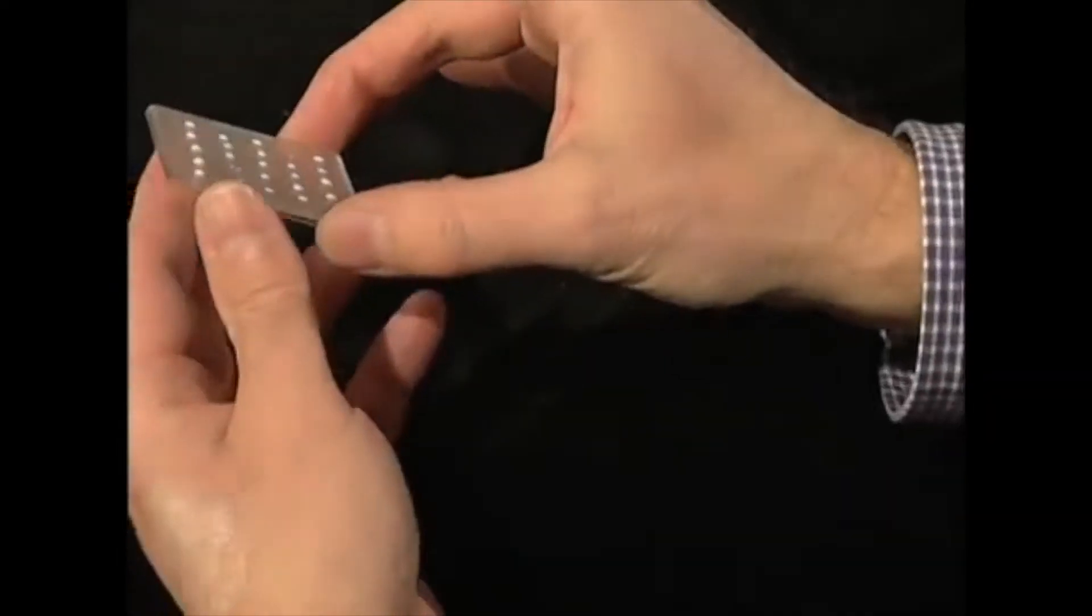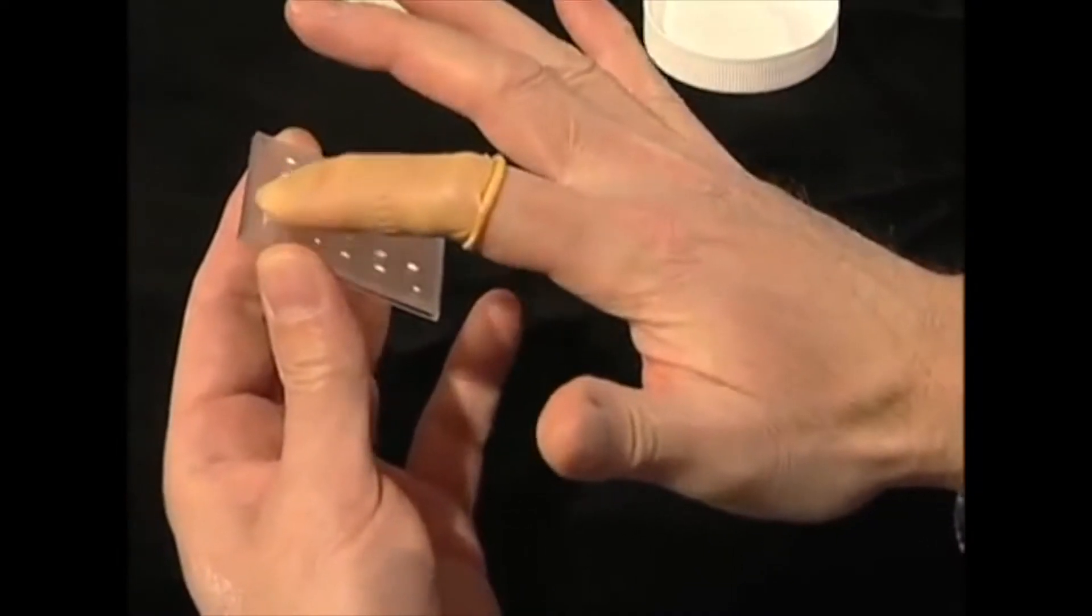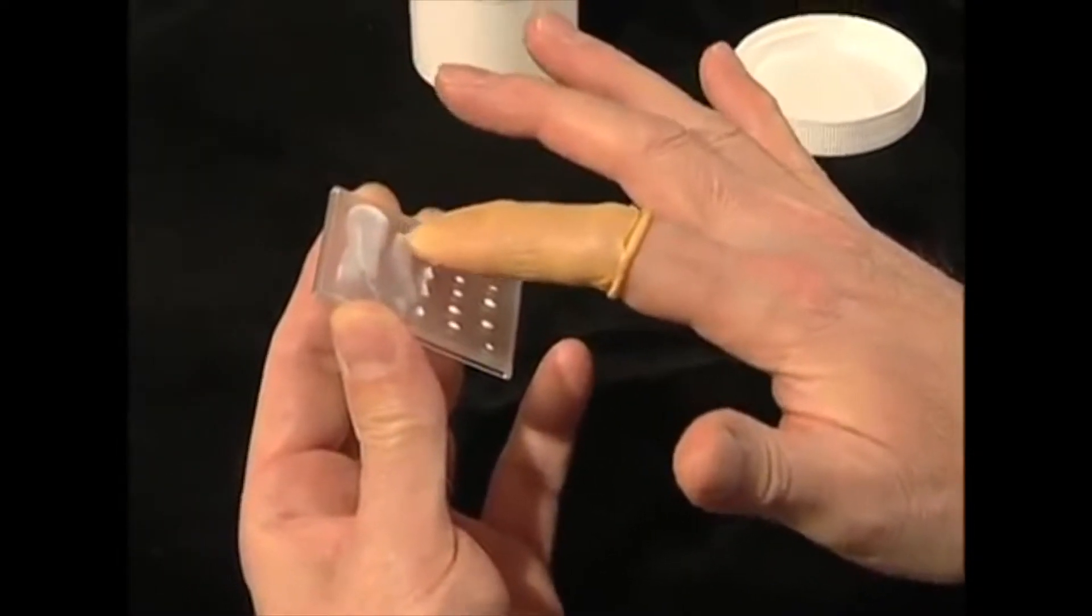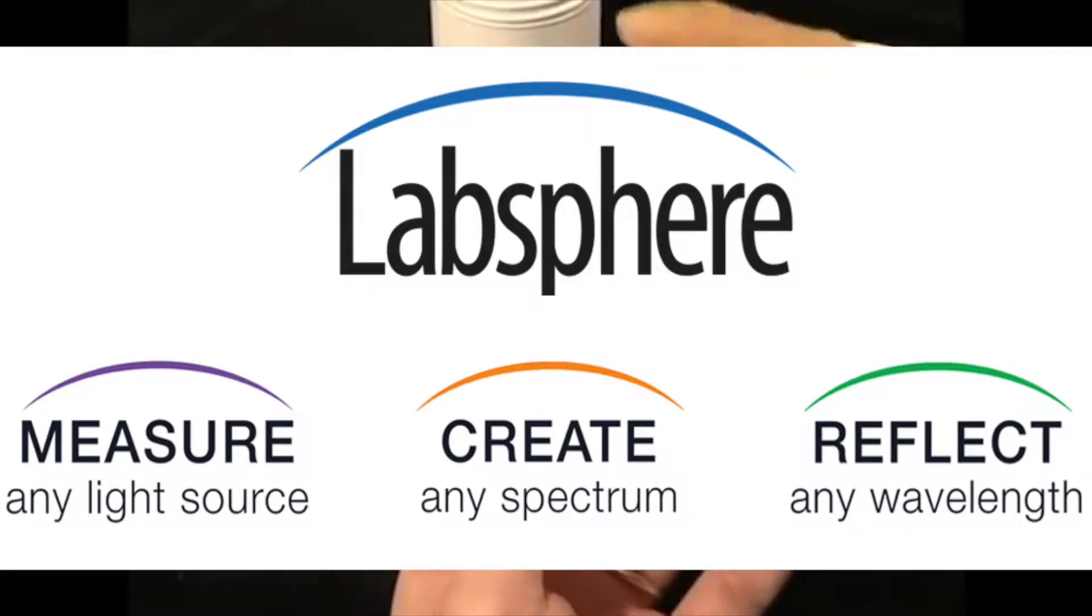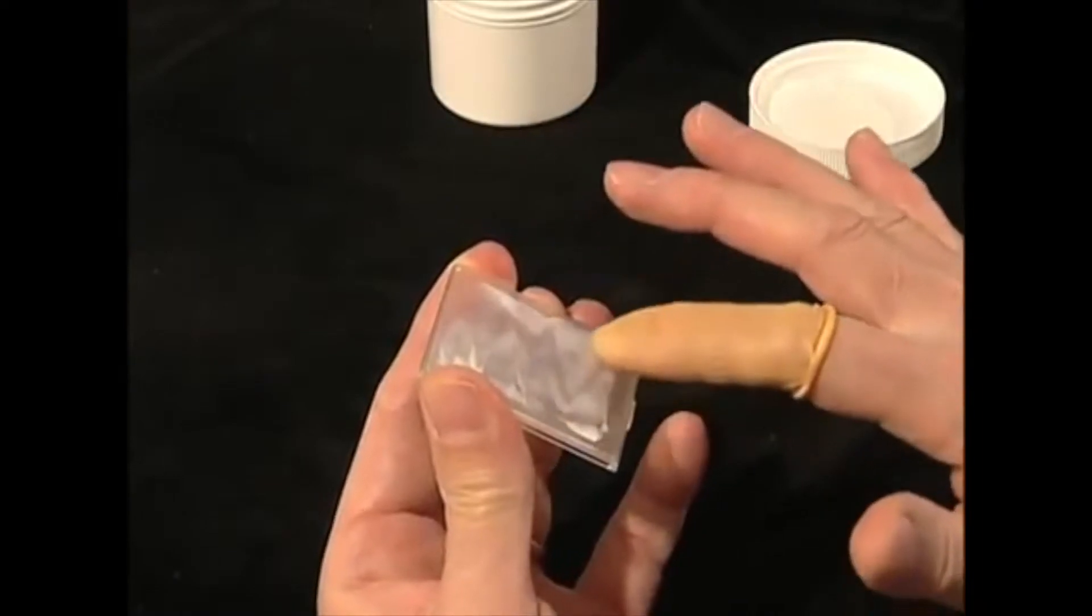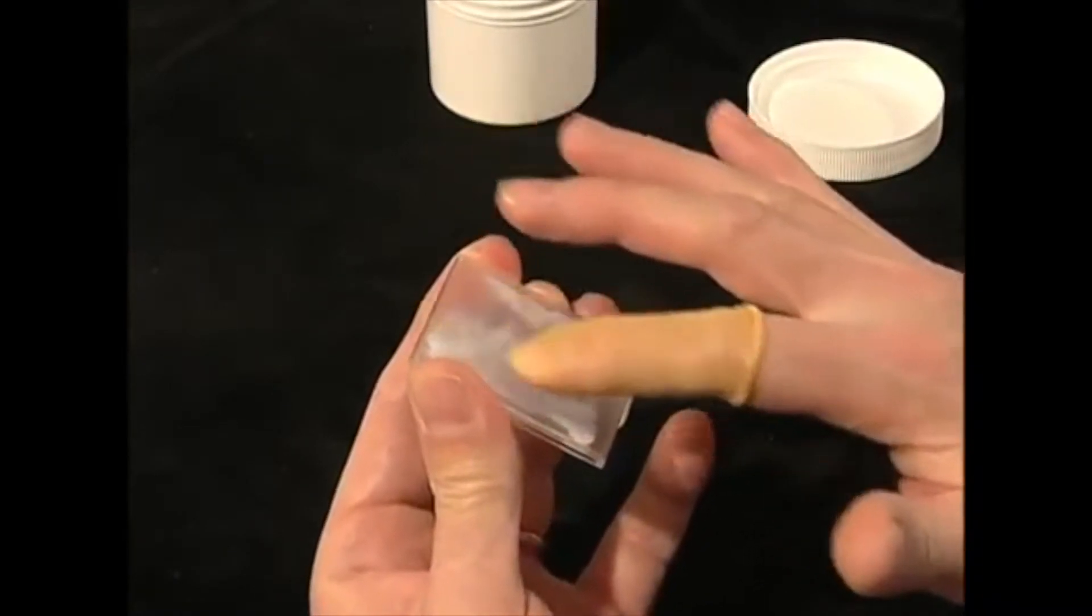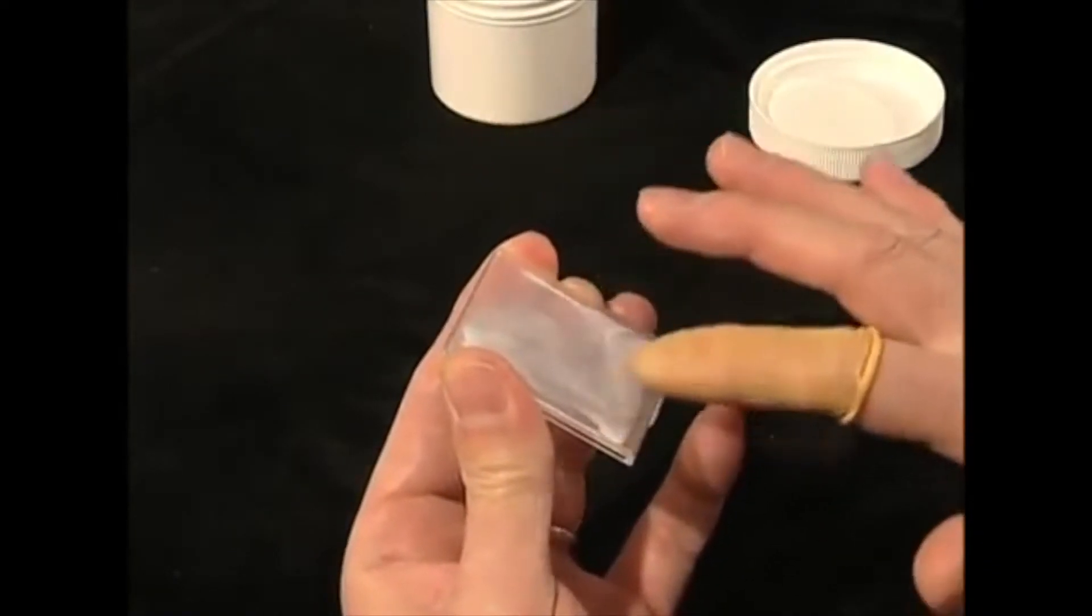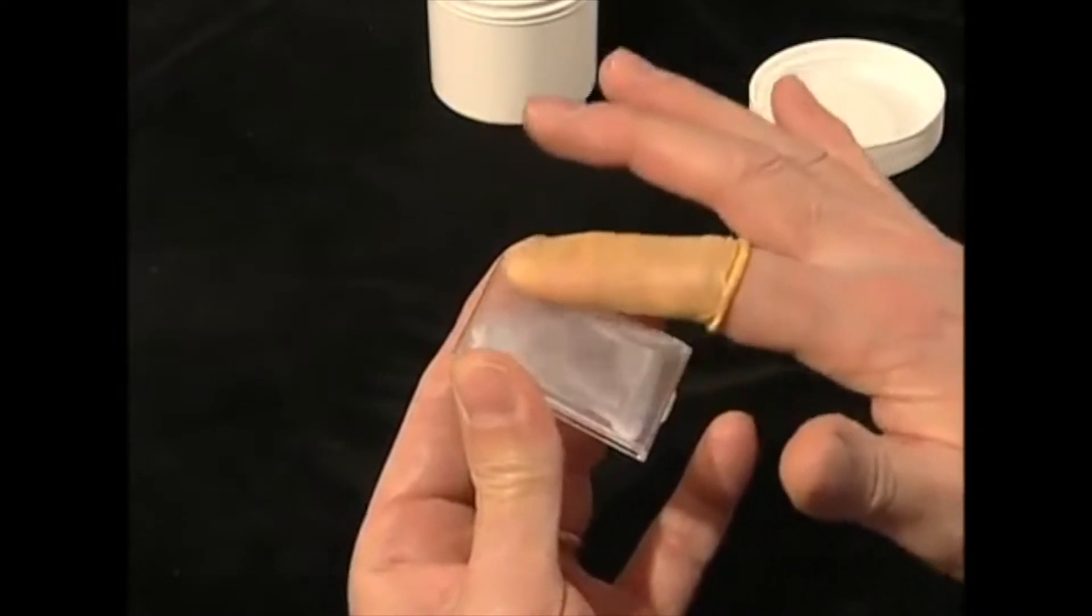The accuracy of any sunscreen product measurement is dependent upon a good product application technique. It is critically important that the sunscreen product is uniformly distributed over the entire substrate surface and an optimum film thickness is achieved.